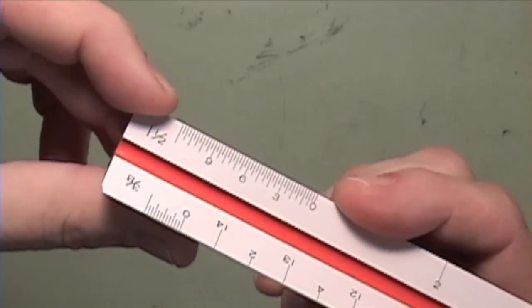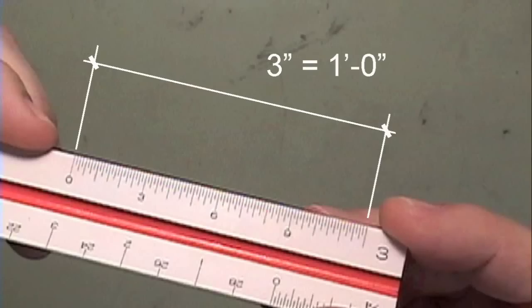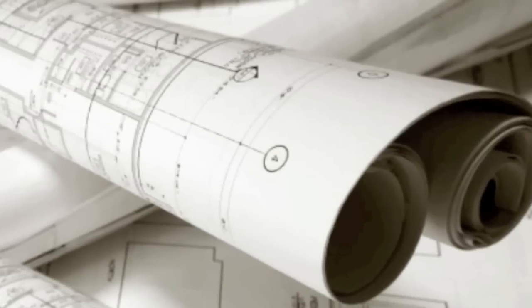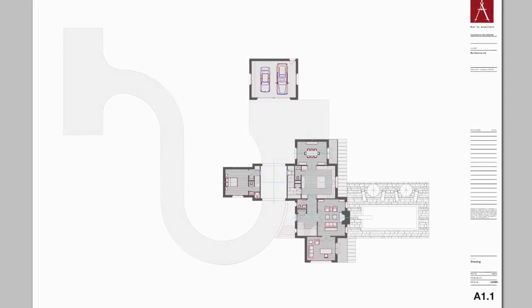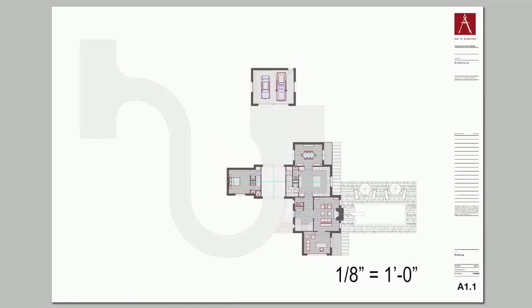After the site plan, one of the first drawings you'll typically see in an architectural set is the floor plan. Floor plans are typically drawn at 1/8 scale or the larger 1/4 scale.